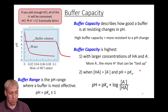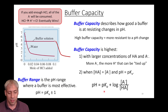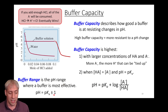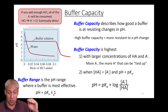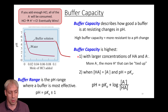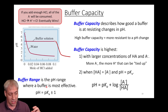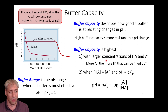Buffer range describes what pH range the buffer is effective in. A buffer is most effective when pH equals pKa, but it remains effective plus or minus one pH unit from the pKa. Beyond that range, H⁺ or OH⁻ will win and the buffer is no longer effective. Buffer capacity describes how long the buffer maintains within that range; buffer range describes the plus-or-minus one unit window where it holds.